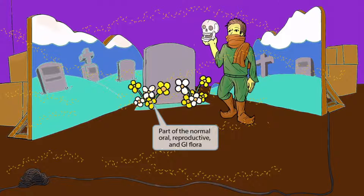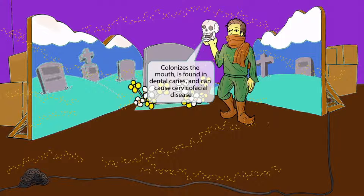Notice that there are flowers right next to the tombstone. 'Flower' sounds like 'flora,' so it's in this image to help you remember that Actinomyces is part of the normal oral, reproductive, and GI flora. One of the most important associations for Step 1 is the mouth. We've shown Hamlet holding up a skull with its mouth open — the skull with an open mouth should help you remember that Actinomyces colonizes the mouth, is found in dental caries, and can cause cervicofacial disease.